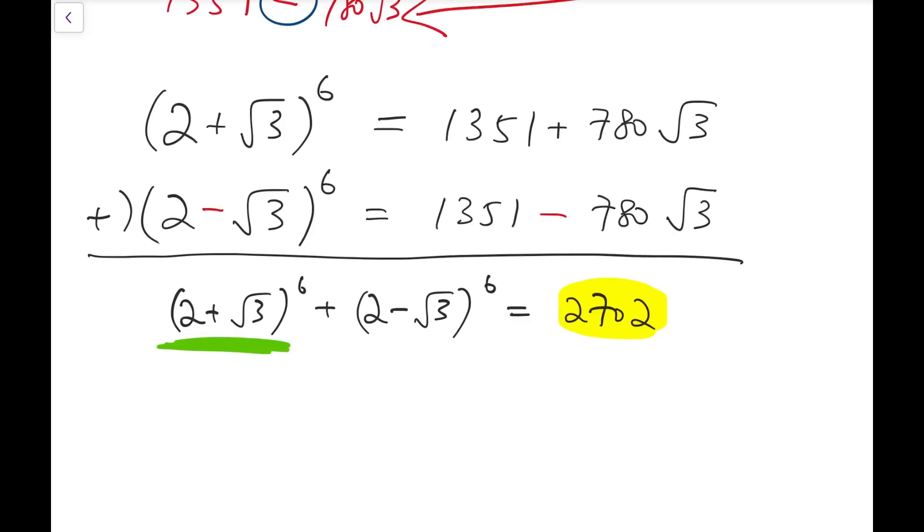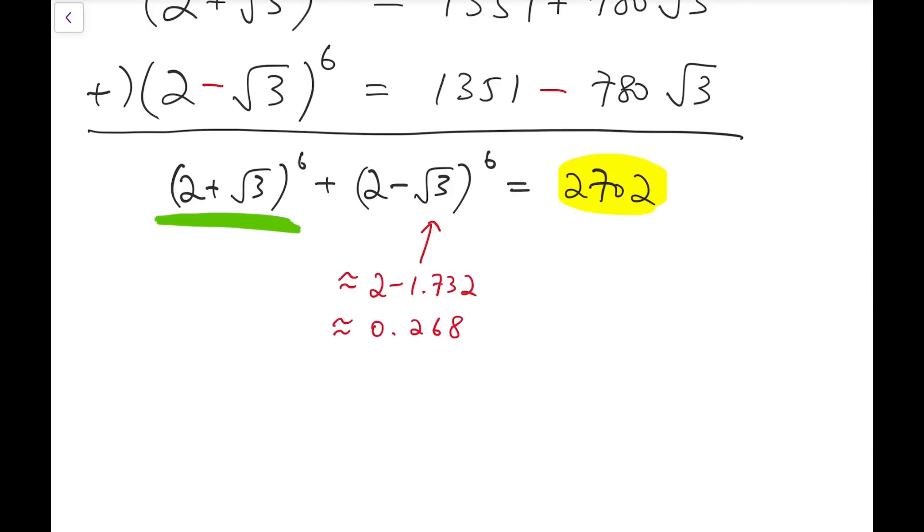Because this is the original number, and we're actually adding it by a small positive number. 2 minus square root of 3 is roughly 2 minus 1.732, if you kind of remember what's the value of square root of 3 approximately. And it's about 0.268. So a number that is between 0 and 1, if you bring it to the sixth power, then it will still be a number that is between 0 and 1. So that means, our original number, underlined in green, will be something like 2701 point some decimals at the end.